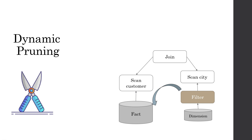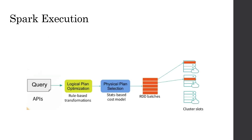This is the concept of dynamic pruning — we are dynamically creating or pruning the bigger table. Now let us look at how Spark is introducing this particular dynamic partition pruning. To do that, let us look at the whole flow of how a Spark query or API gets executed.